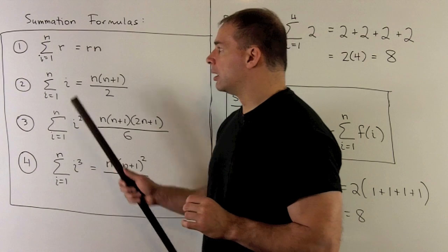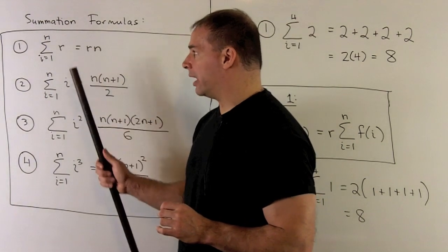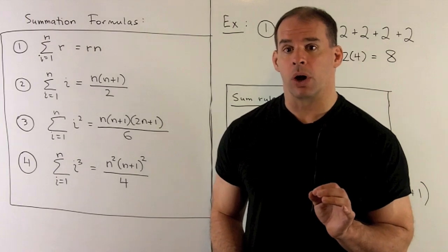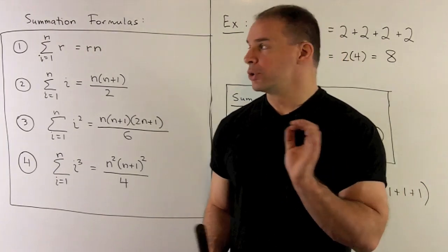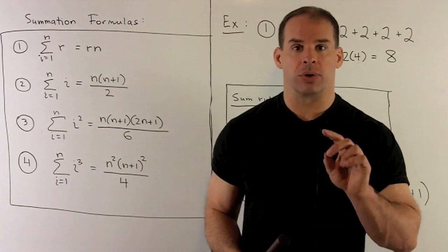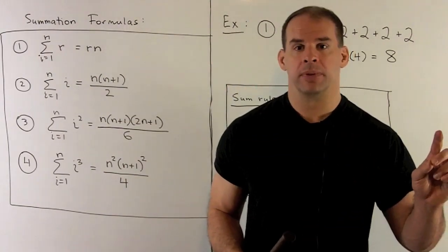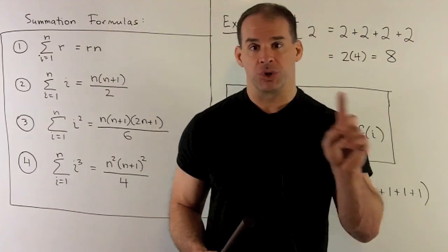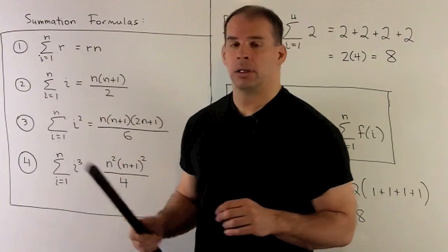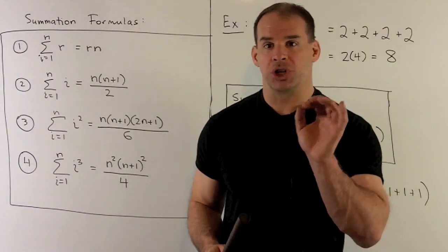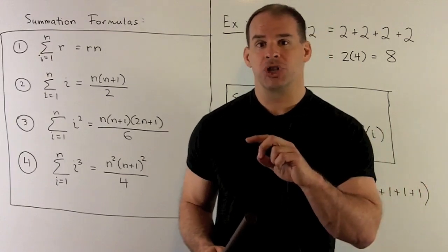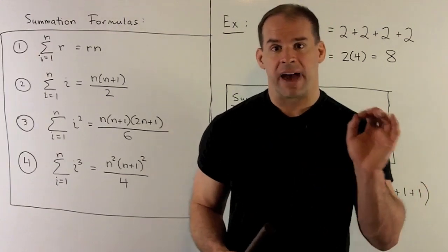The first formula is the sum as i goes from 1 to n of the number r. So how does sigma notation work? We'll start with a range of integers — here it goes from 1, ending at n. Then we have a variable i that ranges over those integers. In front of our sigma is a function of i. We take each of our integers, push it through the function, and then take the sum of the values.